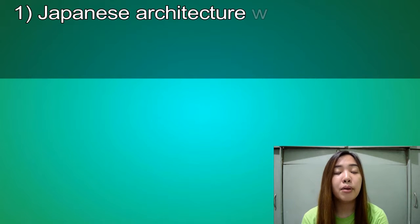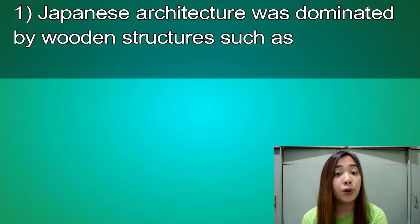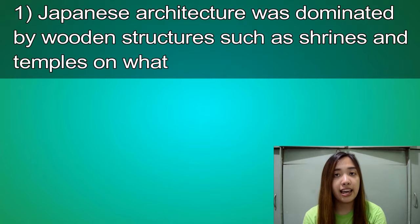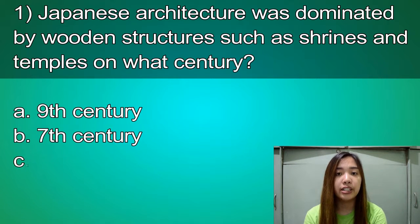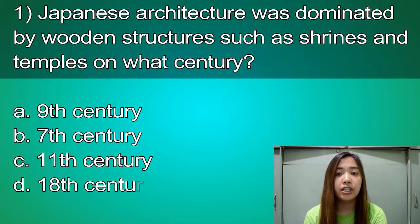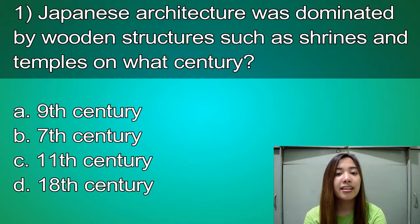Now for a quick review, I have prepared five questions to test your knowledge. Are you ready? Let's begin. For the first question, about the origin: Japanese architecture was dominated by wooden structures such as shrines and temples in what century? Is it A. 9th century, B. 7th century, C. 11th century, or D. 18th century? You have five seconds to answer. Time's up. The correct answer is B. 7th century.